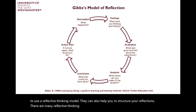This model is made up of six stages. Start at the top left, at the description stage — this is where you set the context: what are you reflecting on? Is it a module, a particular situation, a work placement, or maybe a group assignment? Moving clockwise, the next stage is feelings: what were you thinking and feeling at the time? Then evaluation: what was good and bad about the experience? It's really important here to bring in balance and look at different perspectives — a good time to include any peer or tutor feedback.